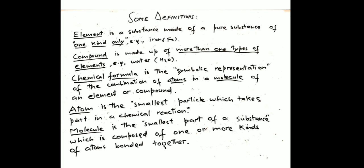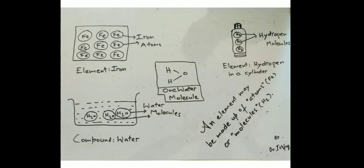If there are different types of atoms in a molecule, it will form a compound. If there are multiple atoms of the same kind in one molecule, it will be an element. For example, hydrogen and chlorine exist as diatomic molecules.